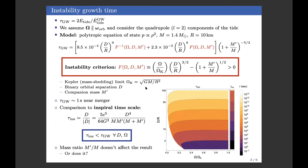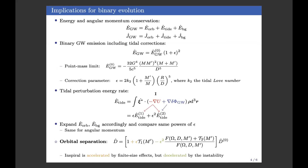Even though the instability doesn't seem to have enough time to fully develop, its effects could still accumulate through the inspiral, since during the inspiral there are many many cycles before the two objects merge. This is actually similar to what happens with regular tides: the effects of tides on the gravitational wave signal are not individually large, but because they accumulate through the inspiral we can detect a phase offset in the gravitational wave signal that is measurable.